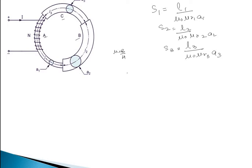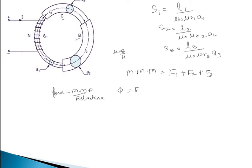We know that MMF is given by capital F. For three parts we can write: total MMF F = F1 + F2 + F3. Using the basic relation between flux, MMF, and reluctance — flux φ = MMF/S, therefore F = φ × S. And the total reluctance S = S1 + S2 + S3.